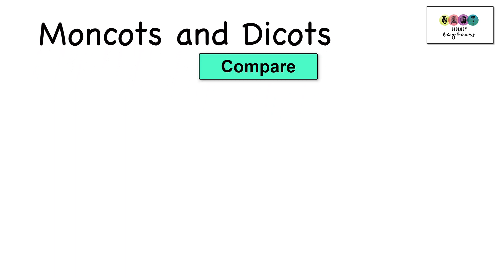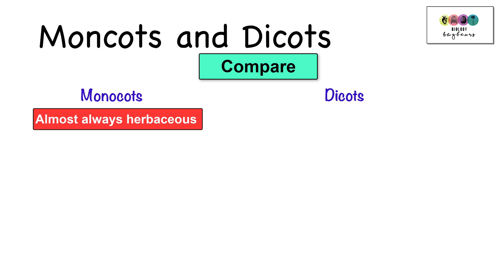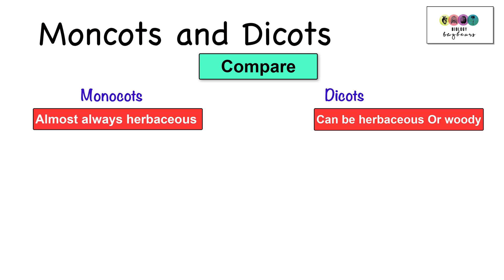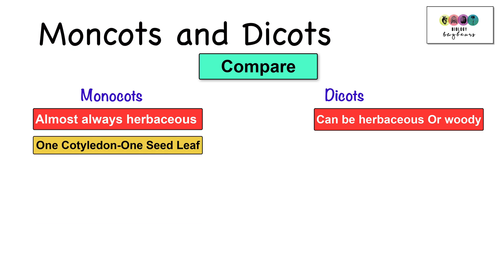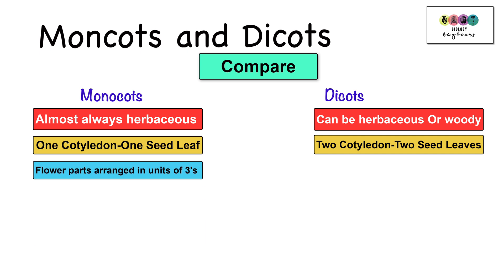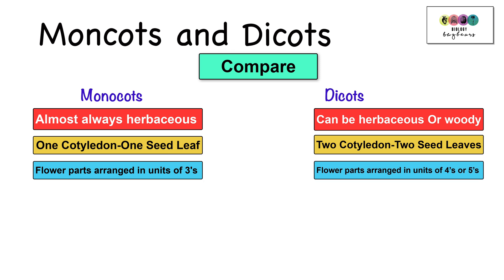It's always wise to make sure that you can create a table to compare monocots and dicots. What are the key features? So in monocots, they're almost always herbaceous, whereas in dicots, they can be herbaceous or sometimes woody. Monocots have one cotyledon, one seed leaf, whereas dicots have two cotyledons, two seed leaves. In monocots, the flower parts are arranged in units of threes, whereas in dicots, the flower parts are arranged in units of fours or fives.